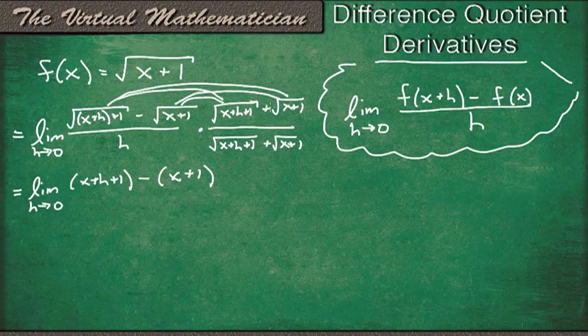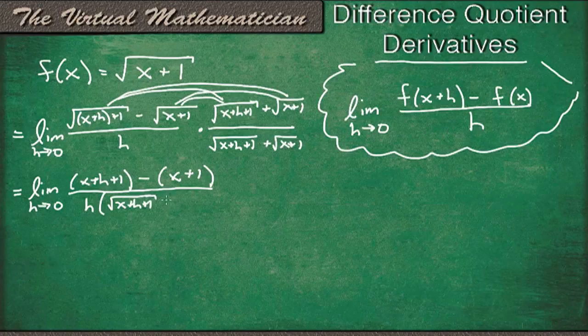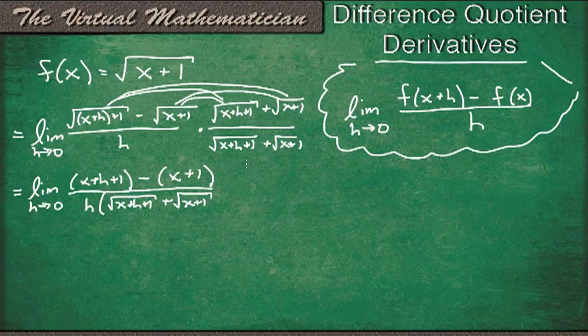Minus 1 times plus 1 is minus 1. And this is going to be all divided by h times square root x plus h plus 1 plus square root x plus 1. Now we can do some simplification.